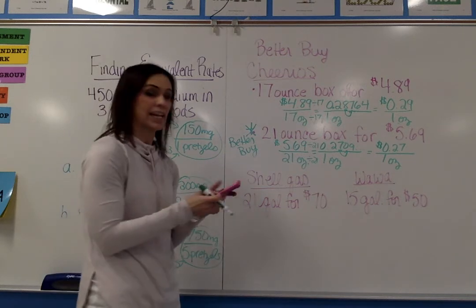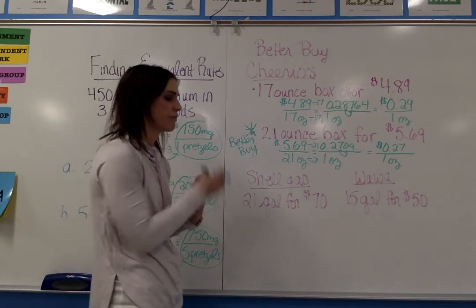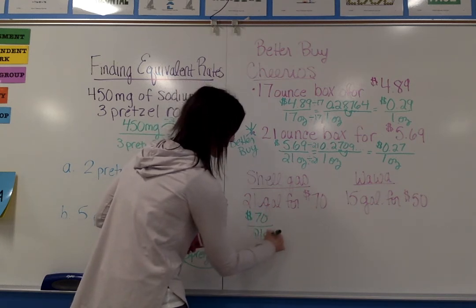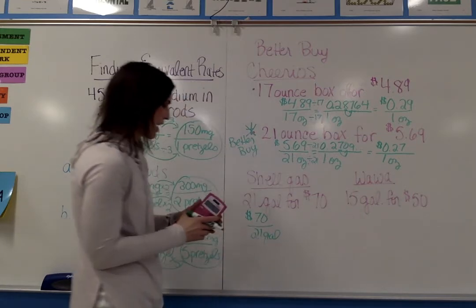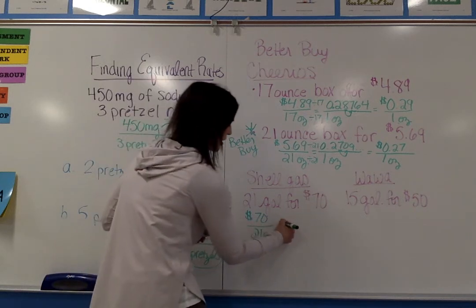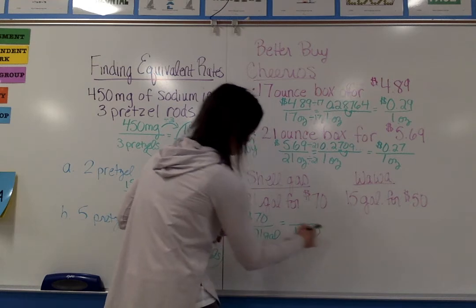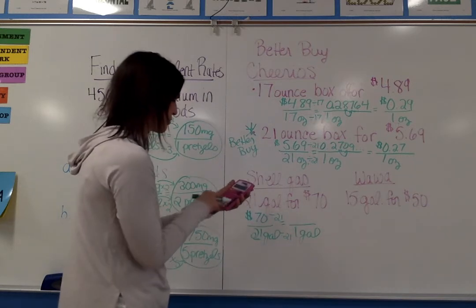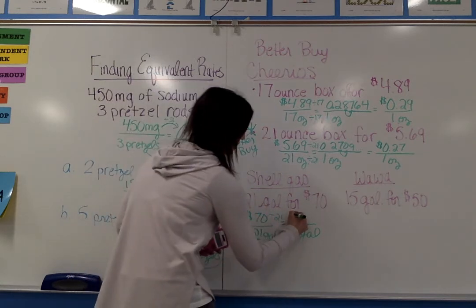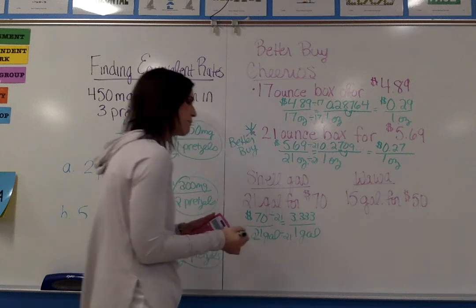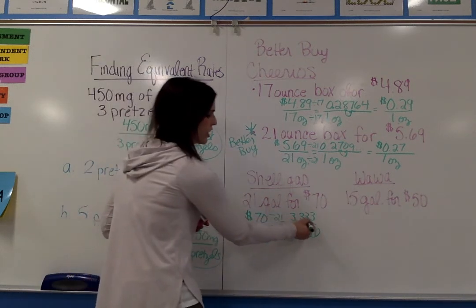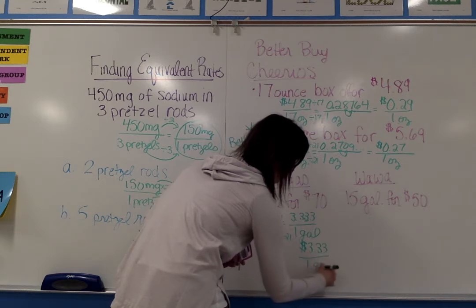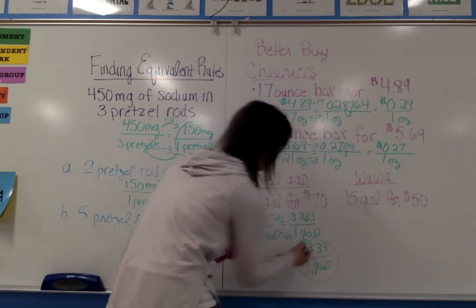The next example looks at the price of gas per gallon. At the Shell gas station, I pay $70 for 21 gallons. The dollar amount always goes on the numerator and the unit of measurement — gallons — goes on the denominator. I need the cost for one gallon, so I divide the denominator by 21 and also divide 70 by 21. That gives 3.333 repeating. Rounded to the nearest cent, that's approximately $3.33 per gallon at Shell.